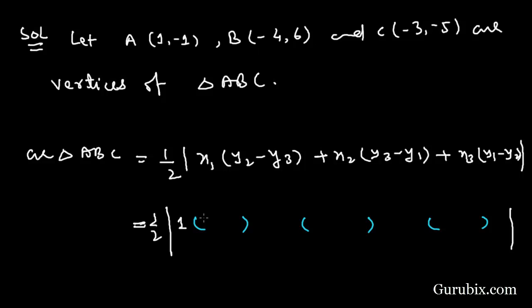This means if we subtract minus 5 from 6 then it will be 6 plus 5. And x2 y2 is minus 4, we shall write minus 4 here. y3 minus y1 is, y3 is minus 5, y1 is minus 1, this means minus 5 plus 1.